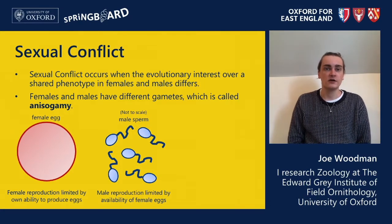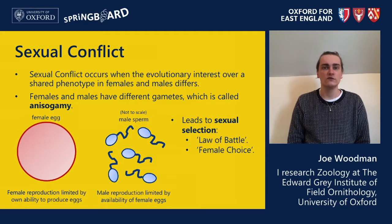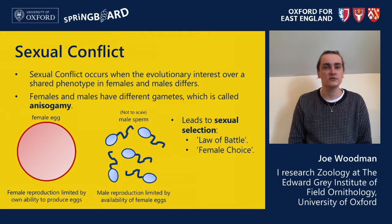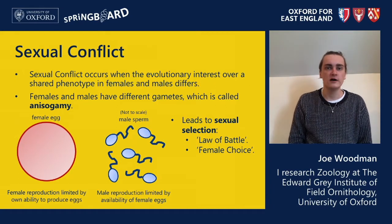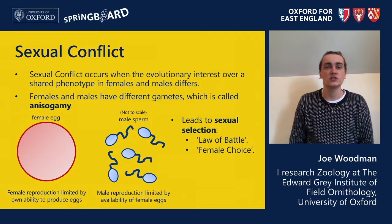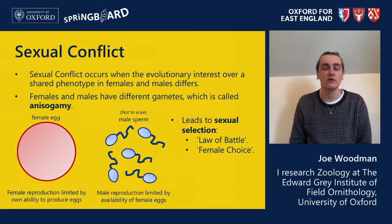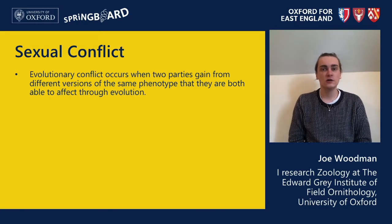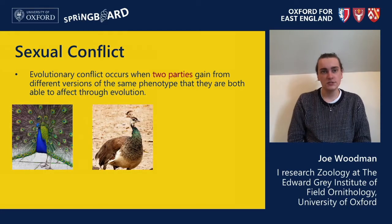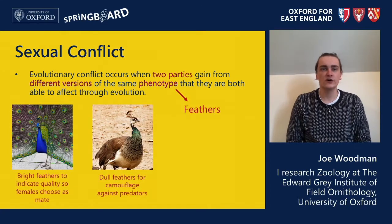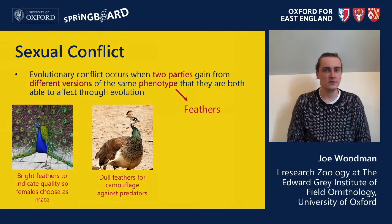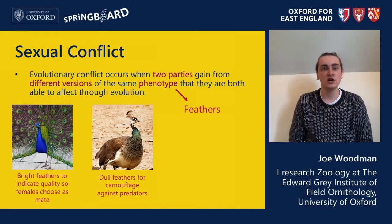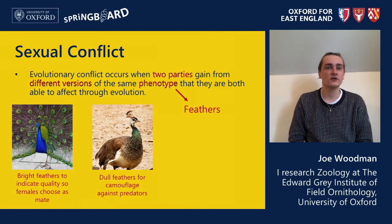These limitations lead to something called sexual selection, where males evolve to have competitive advantages over other males in terms of access to females — called the law of battle — while females evolve to prefer males more likely to produce higher quality offspring, called female choice. This in turn leads to male adaptations that indicate their quality as a mate. Revisiting our peacocks: the two parties are male and female peacocks, the phenotype is feathers, and males want bright feathers to indicate quality and attract mates, while females want duller feathers for camouflage. And so there's sexual conflict.